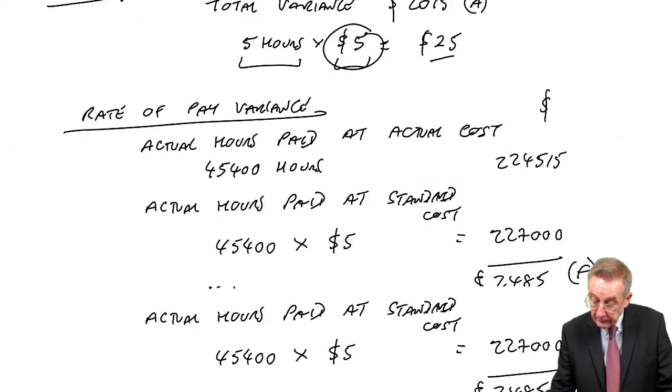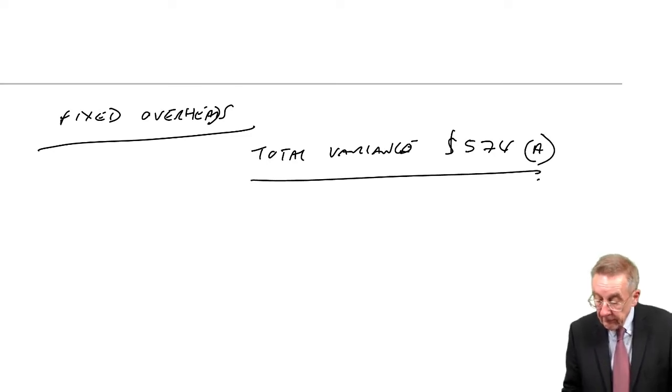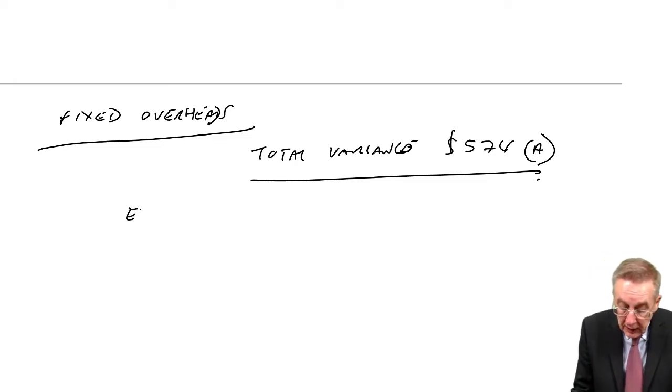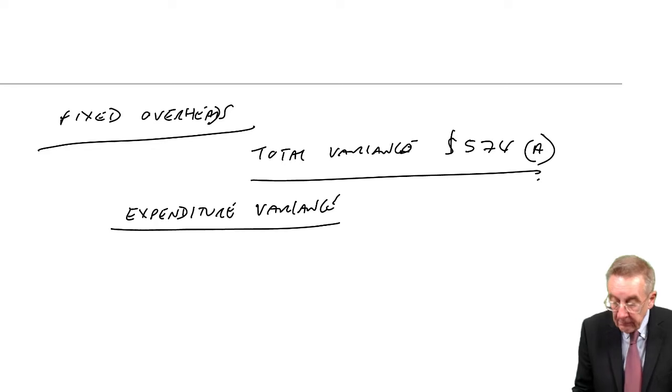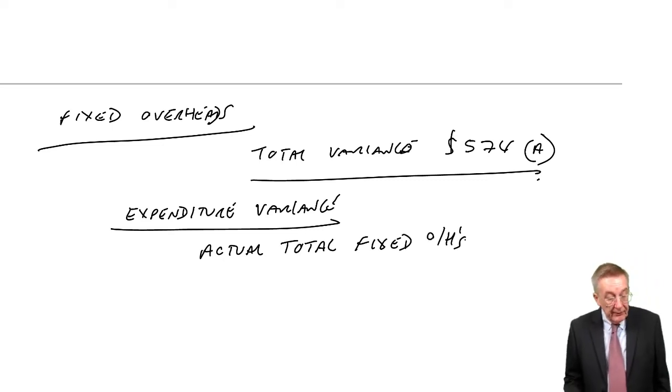Watch what we do. Part of it, I think, is very easy and very obvious. Remember, the total variance we're trying to explain was that $574 that we had in our statement. When we come to analyse it, first of all we have the expenditure variance.